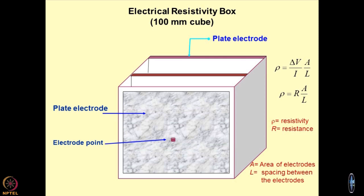This is how the calibration is done. We can find out the resistivity of the geomaterials by filling up this box with some known fluid — mostly sodium chloride or potassium chloride. The area upon length becomes the cell coefficient. Whatever voltage you are applying and whatever current you are measuring, if the area of cross section and the distance between the two electrodes is known, you can find out the resistivity, then place the soil mass in between and measure its electrical properties.